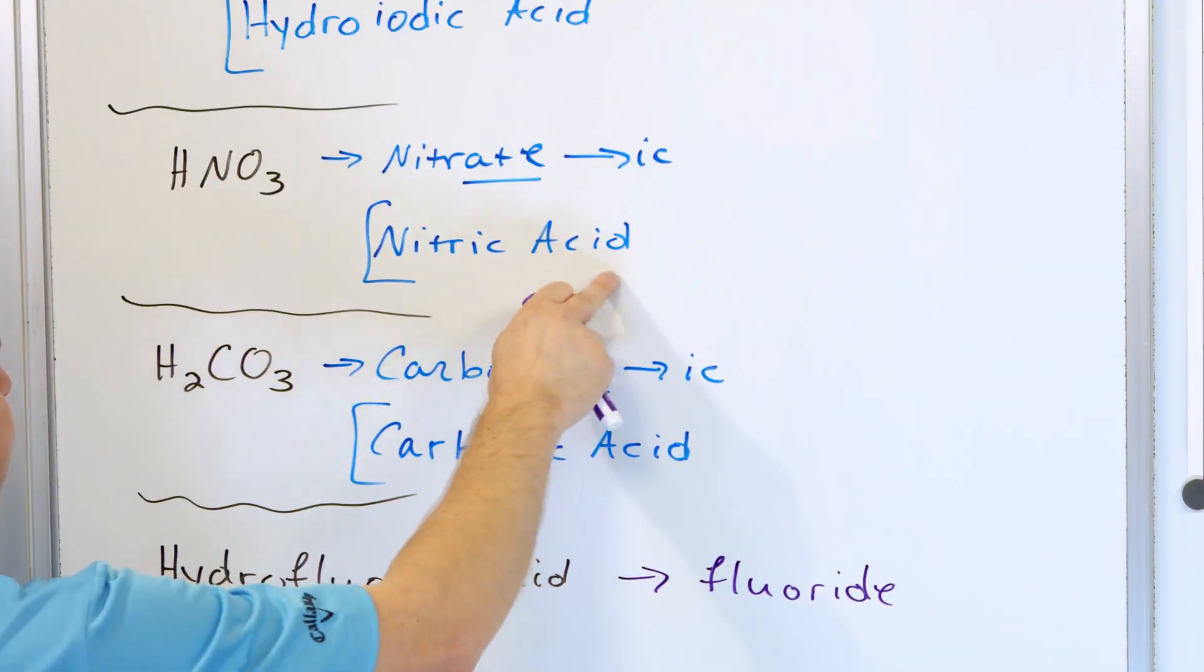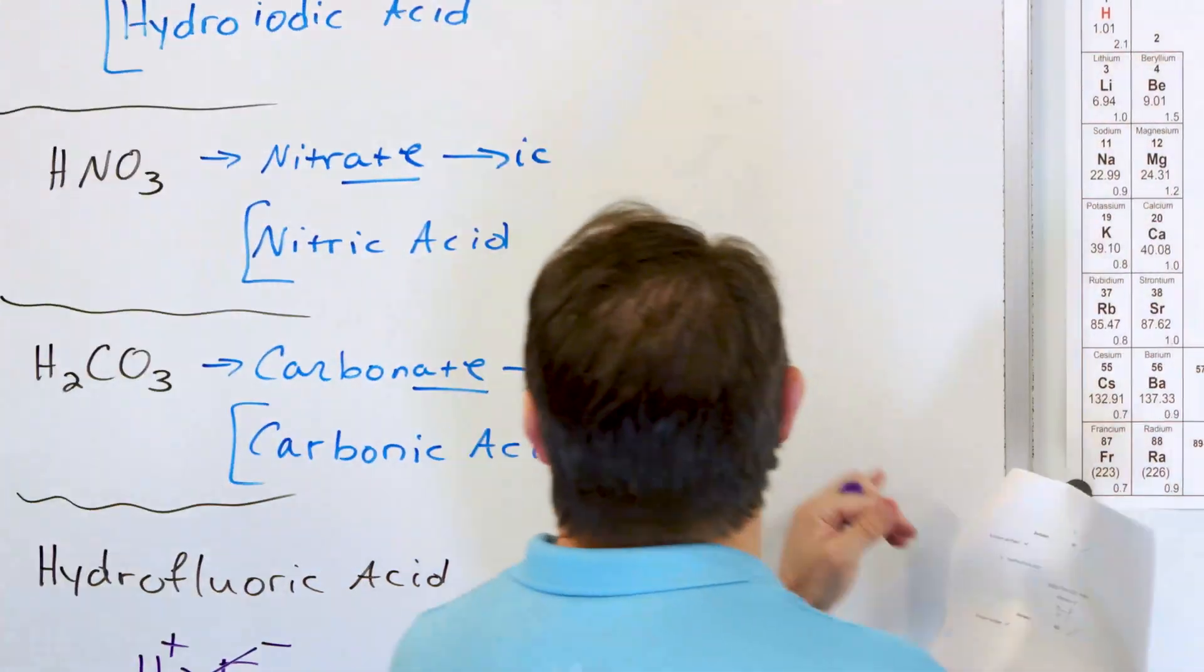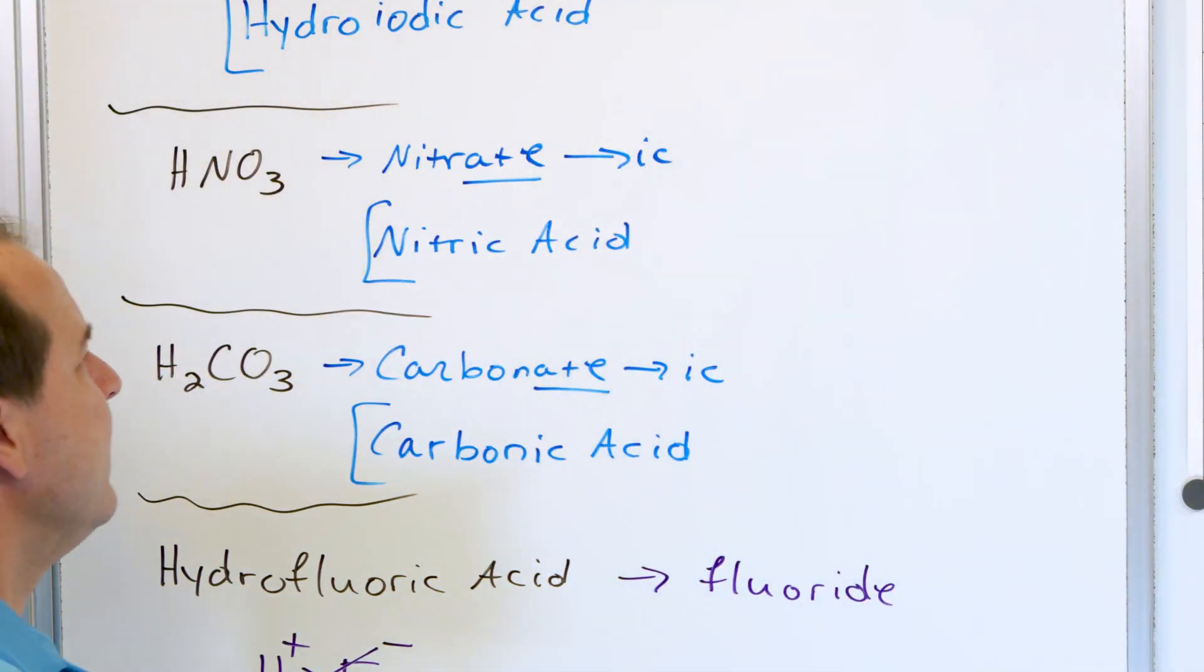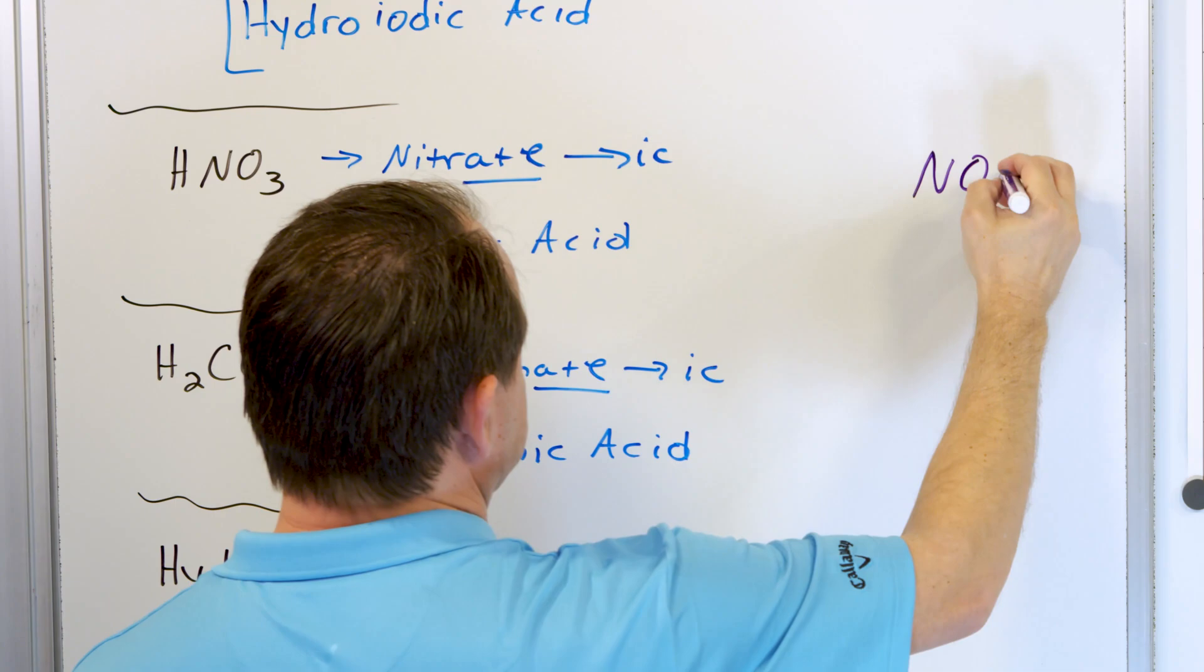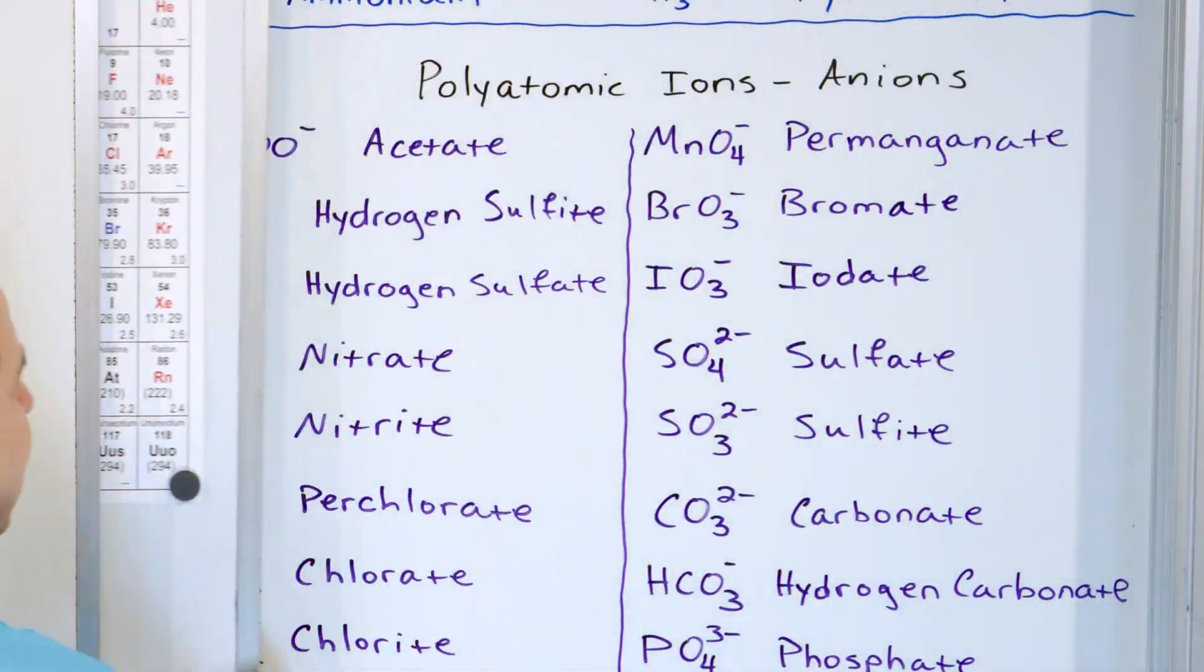And you could do the same thing with any of these things. If I give you the name nitric acid, what you would do is you would go over here and say, well, nitric acid, IC. IC is associated with ATE, so nitrate. So what is nitrate? NO3, right?